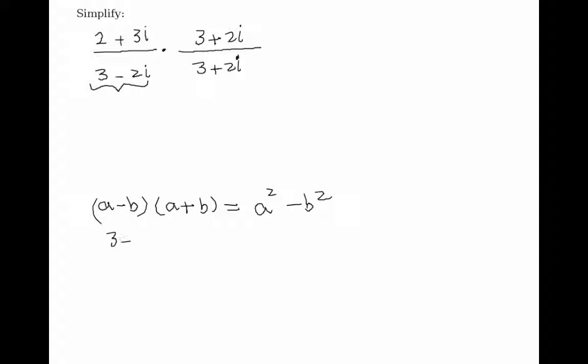So in this case, if I multiply 3 minus 2i by this conjugate 3 plus 2i, that would result in a squared minus b squared. Your first term is 3 here, your a is 3, and your second term is 2i. So this whole thing would give me 9 minus 4i squared.